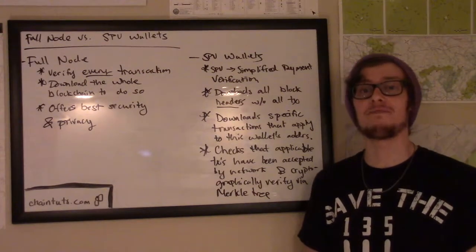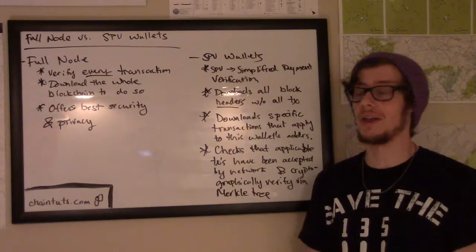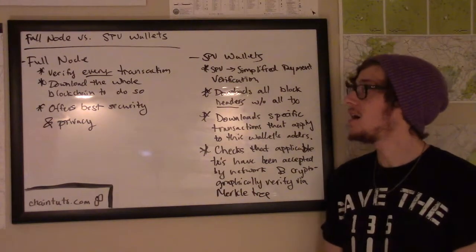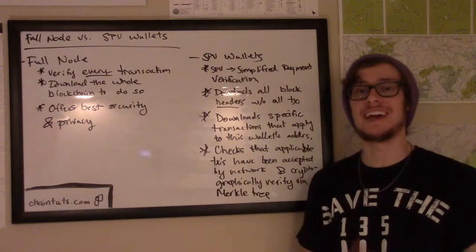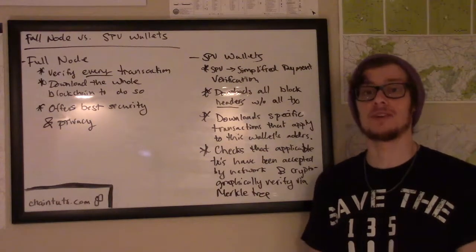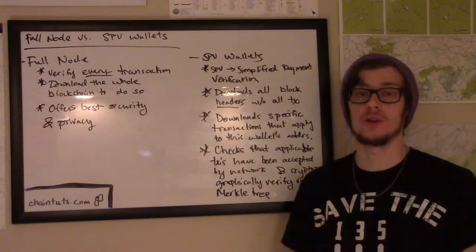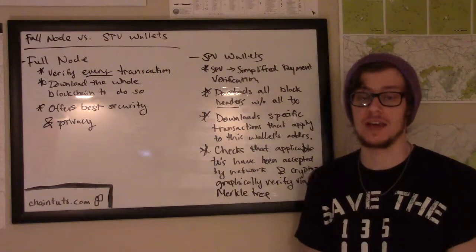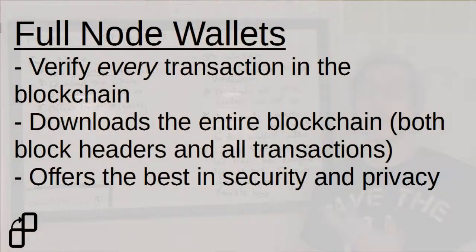First, let's discuss what a full node wallet is. A full node wallet downloads the entire blockchain that applies to that particular cryptocurrency. That means it downloads the block headers with all of the metadata for each block, as well as every single transaction that's included in that block.